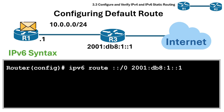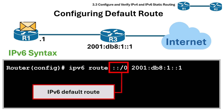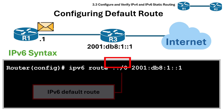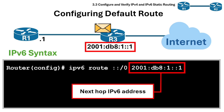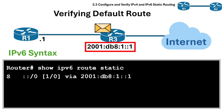This is how we configure a static route for IPv6. The 'ipv6 route' command is used to configure static IPv6 routes. ::/0 is the IPv6 default route representing all networks, and the next-hop IPv6 address follows. To verify the IPv6 static route we use the command 'show ipv6 route static' — under S it will show the default static route and next hop configured.